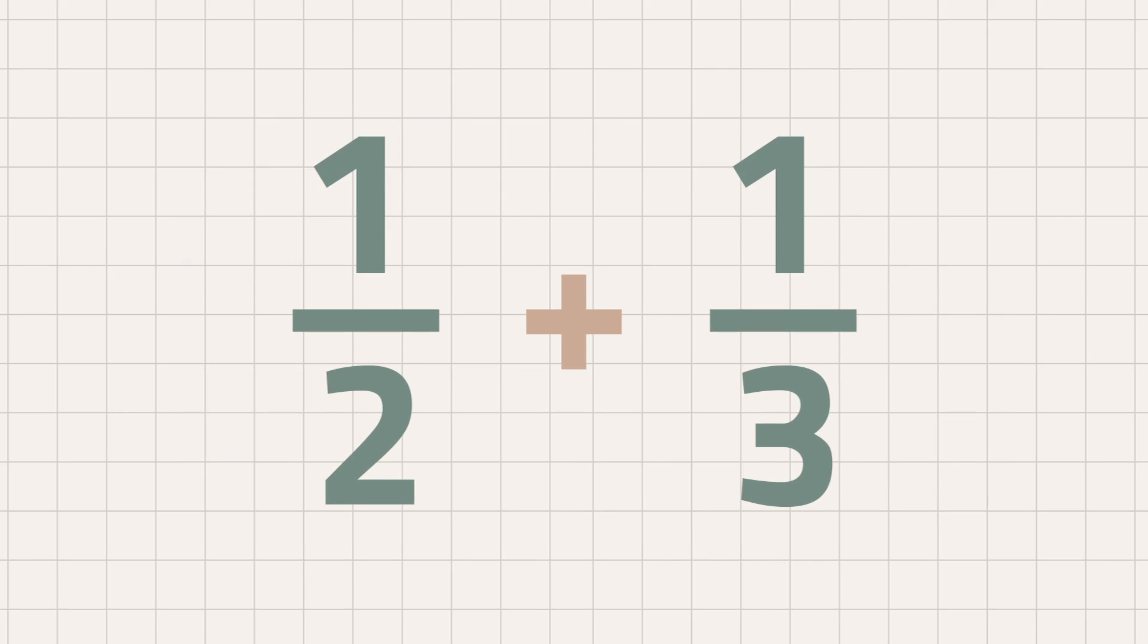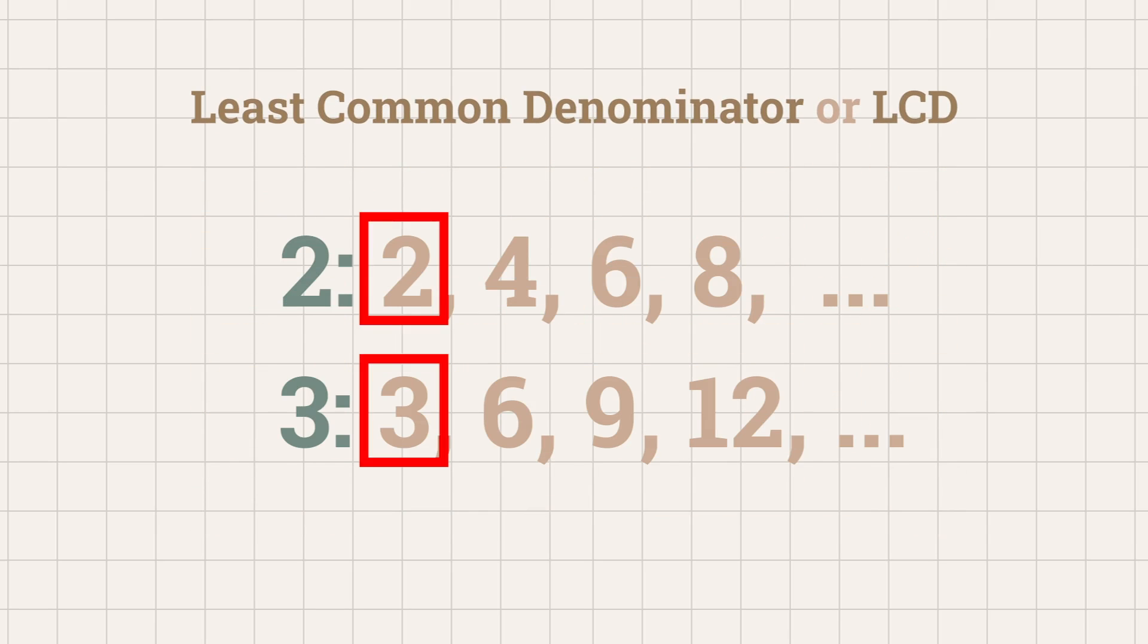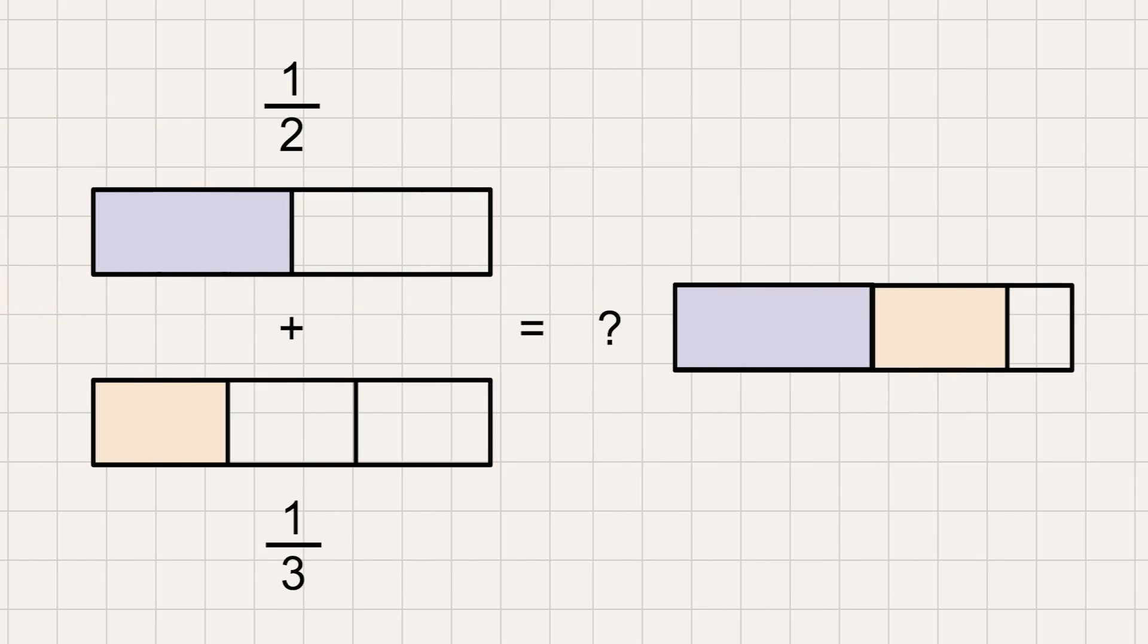We have to cut up the fractions in a way that the parts are all of the same size. To do that, we have to find the least common multiple of the denominators, or simply put, the least common denominator or LCD. Using the listing method, we quickly find out that the LCD of two and three is six.